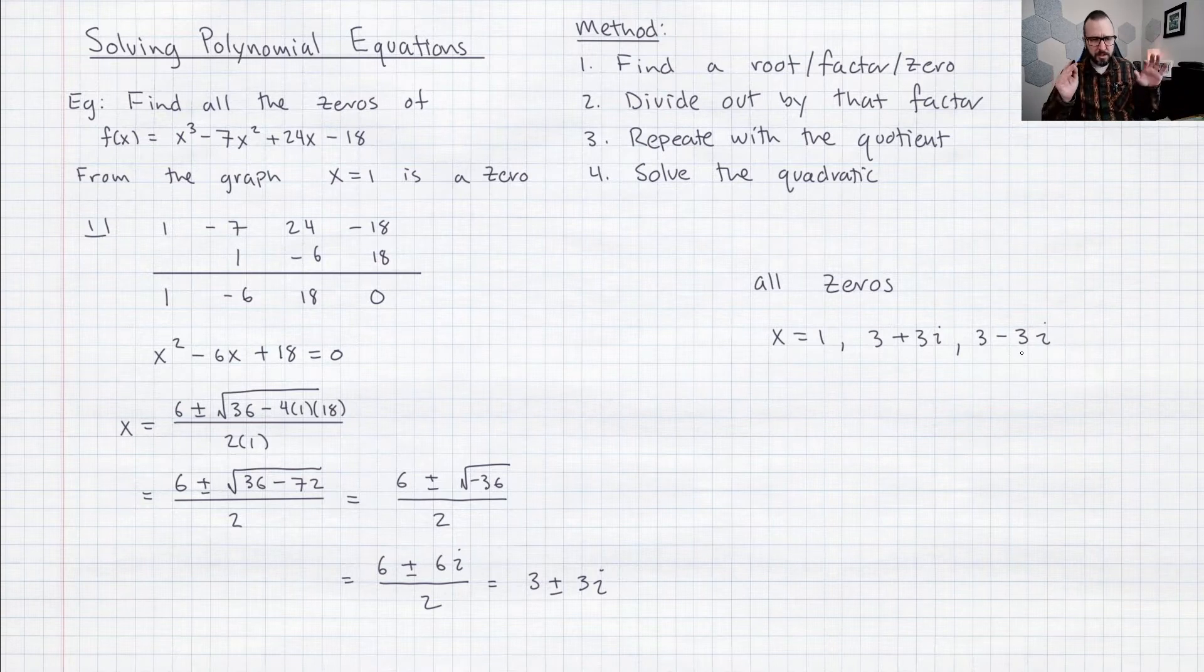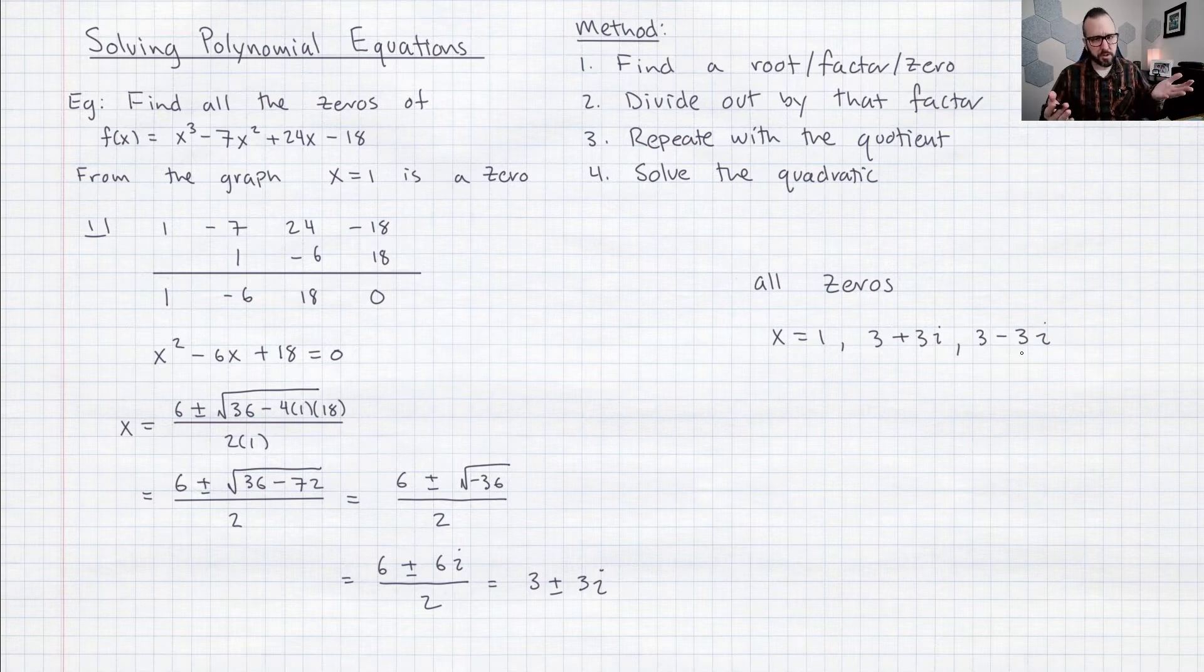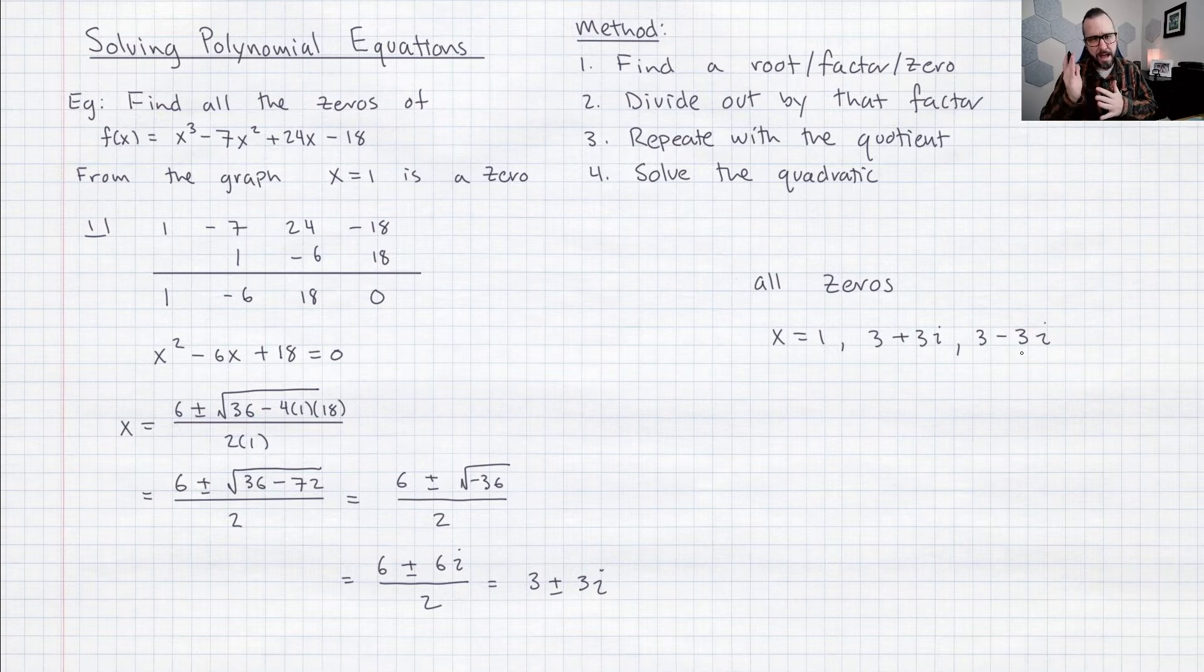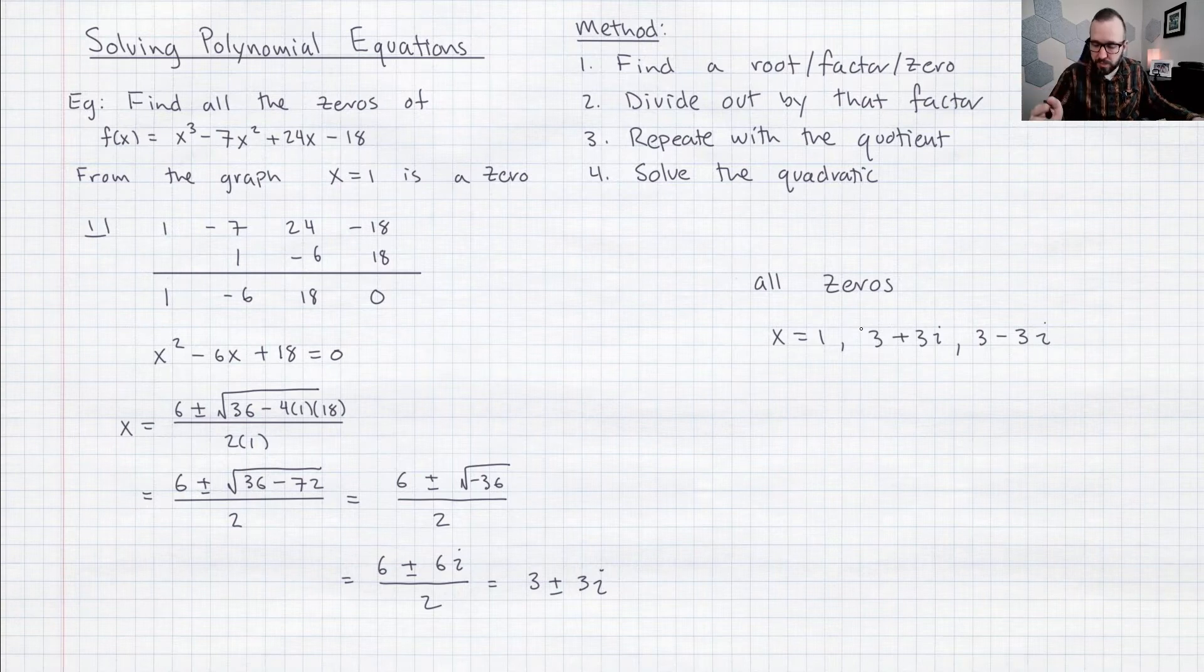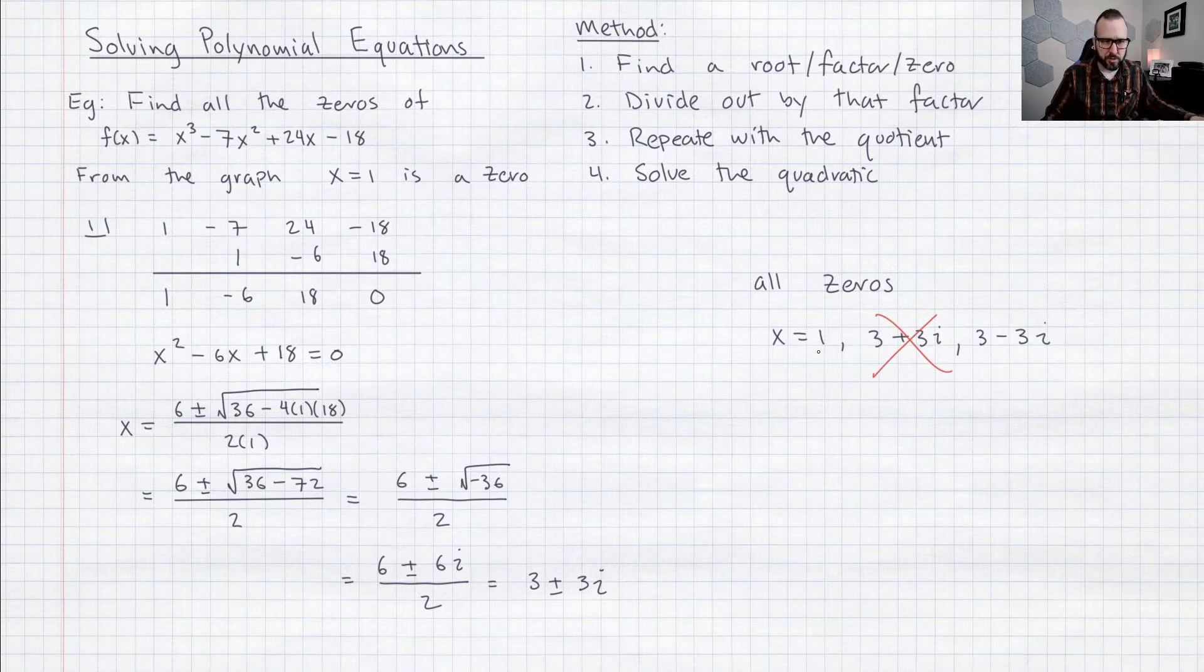So be careful sometimes when you're solving homework problems or something they will say list all the rational zeros or list all the real zeros. So just make sure that your answers actually are what they want here. This problem just said find all the zeros so I am allowed to have all of these answers but if it said find all the rational zeros or find all the real zeros then these two wouldn't count because those aren't real numbers. So just be careful make sure you read the directions correctly.